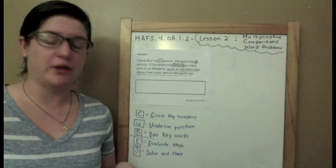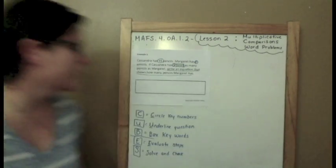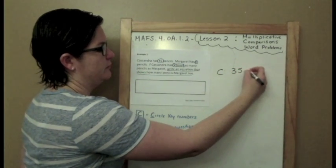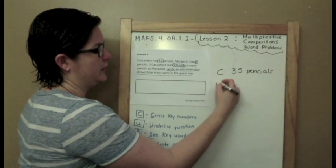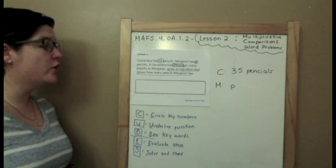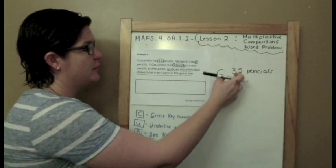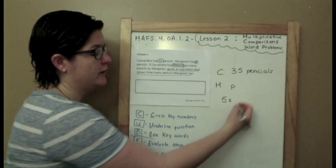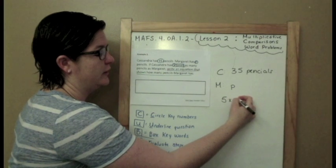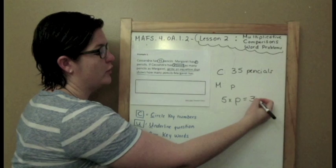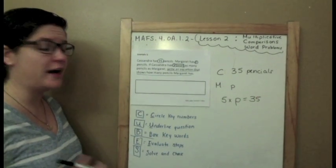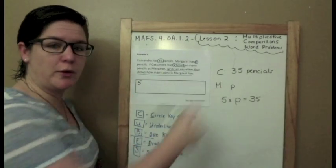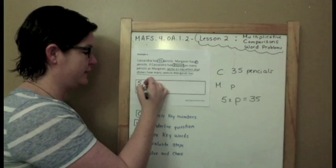So in my equation editor box, I need to write an equation that shows how many pencils Margaret has. Here's how you do it. Cassandra has 35 pencils and Margaret has P, we don't know, that's our unknown. But Cassandra has five times as many as Margaret, so Cassandra has five times the pencils that Margaret has. We know that Cassandra has a total of 35, so five times P equals 35. That's my answer.